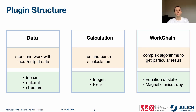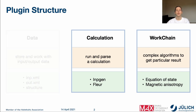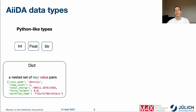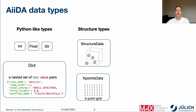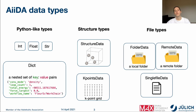Let's talk about the data types implemented in AIDA. First, AIDA implements Python-like data types, for example an integer number, a string, or a dictionary which covers all aforementioned data types for convenience. Structures are also represented in AIDA — there's a special structure data object that helps one to deal with structures. Finally, one can work with file data types. For example, a folder data represents a given folder, and remote data represents a folder on the computer where you performed your calculation.